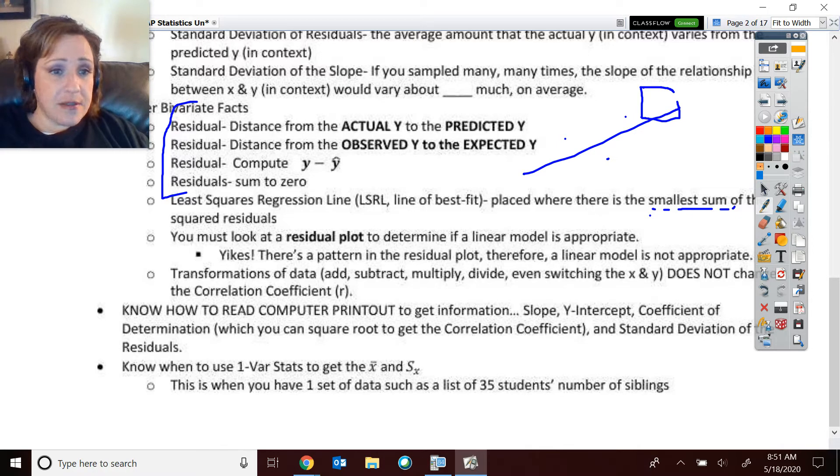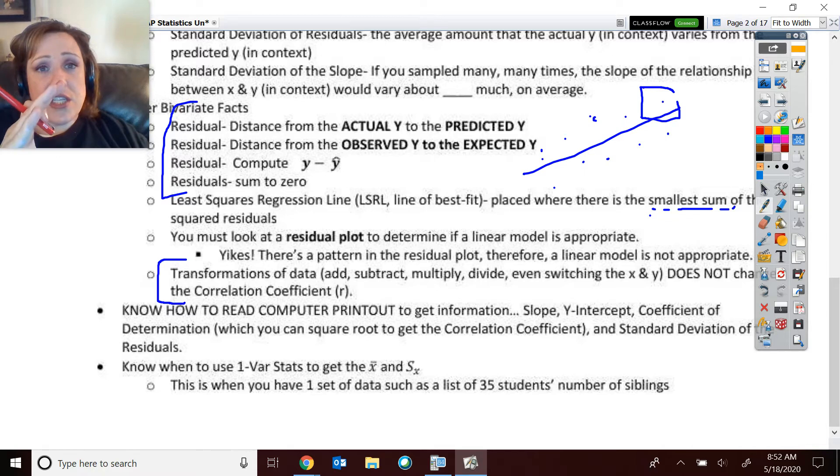And if the pattern is what you see, then you must say, yikes, the pattern in the residual plot, therefore linear is not appropriate. Now, this is interesting. Your correlation, this proportional relationship of the actual data points around the line, does not change. If you add, subtract, multiply, divide, you could even switch the x and the y. And that correlation, that proportional relationship, that strength of linearity, does not change. So that's important.